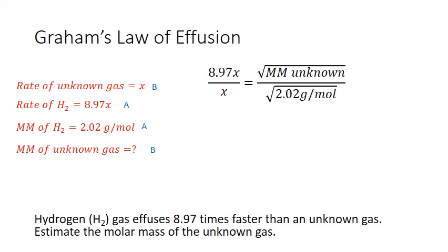So notice that in the substituted formula, x will actually cancel itself out in the ratio on the left hand side. This simplifies the equation. So now all I need to do is get my one variable, my molar mass of my unknown, by itself.